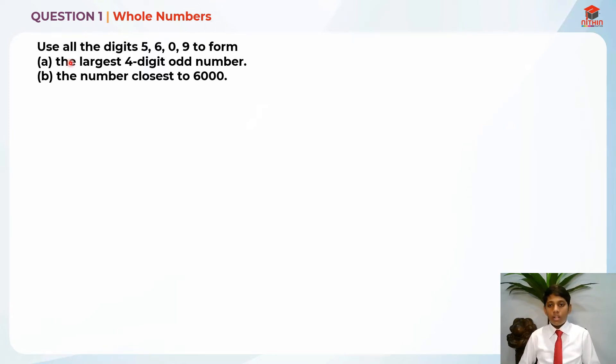Let's read the question for part A first. Use all the digits 5, 6, 0, 9 to form part A, the largest 4-digit odd number. Do you know what are odd numbers and even numbers?